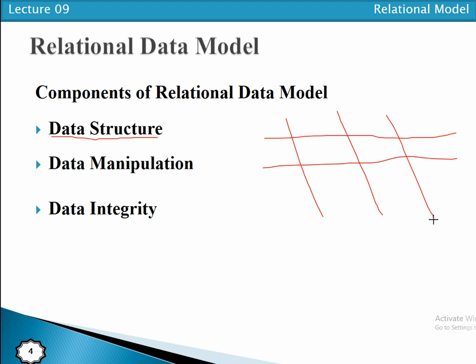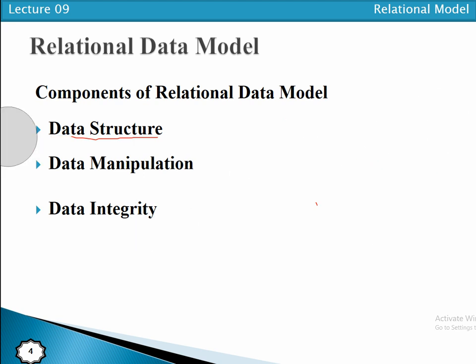The third component is data integrity, which is about maintaining the accuracy of the data. In a relation or table, we have a set of rules that ensure the correctness and accuracy of the data. We will discuss these things in detail.